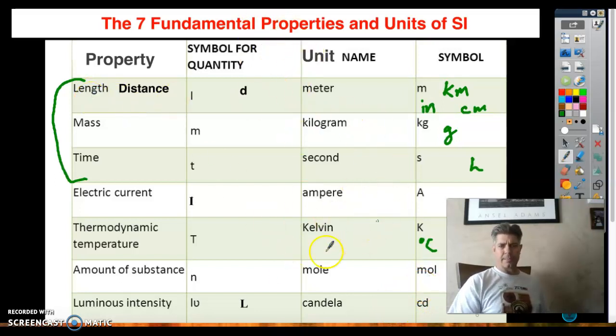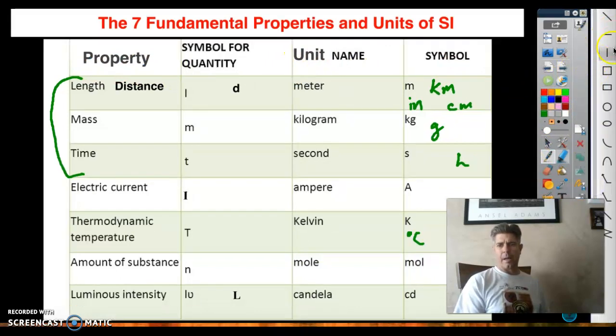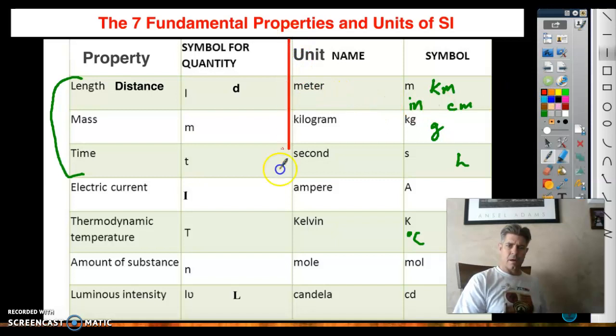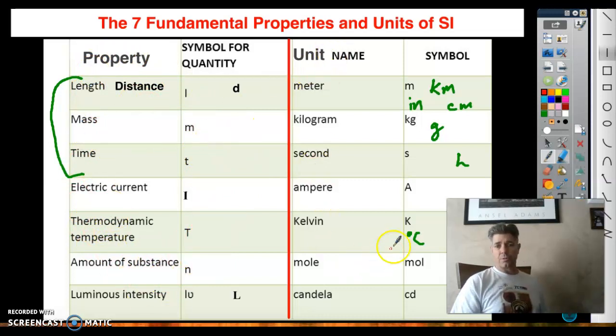So get used to using these, and write these down so you can memorize them. Over on this side of the red line is property. On the left side is property. On the right side is the unit that goes with that property. What we use to measure it. These are used when we're describing the equation, describing something. These are used after we measure it.